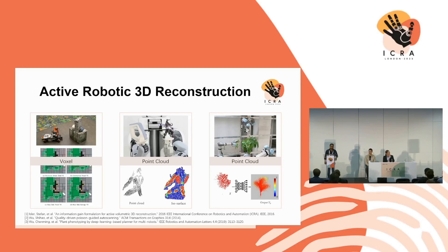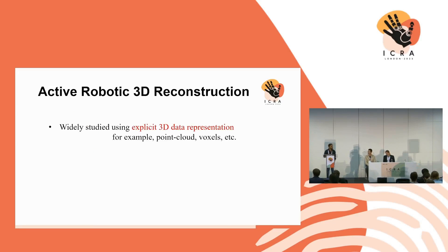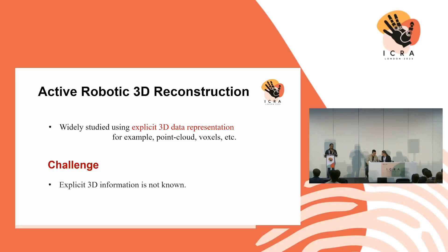Active vision is popular in robotics. The goal is to suitably align the robot pose so that we can gain as much information as possible. This problem is widely studied using explicit representation, because we exactly know where the geometry is, so we can reason about whether the surface is reconstructed well or not. What we aim in this project is to solve the same problem with implicit representation because of the rise of neural radiance fields.